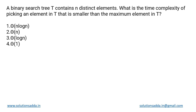This is a DSA question based upon trees. We have been given a BST called T that contains N distinct elements, and from this tree we have to determine the complexity of picking up an element that is smaller than the maximum element. We don't need to return the smallest element — we just want any element that is smaller than the maximum element of that tree. Since it is a BST, let us consider the different cases that can be possible.